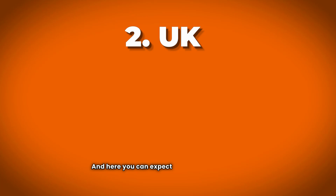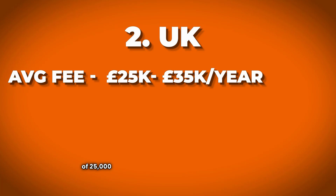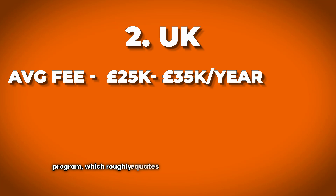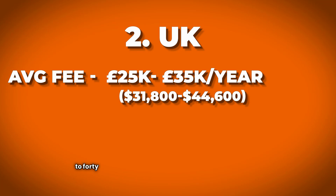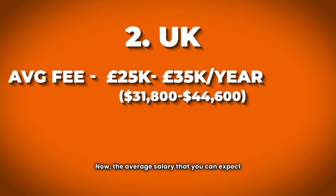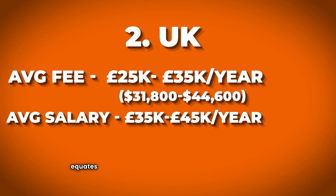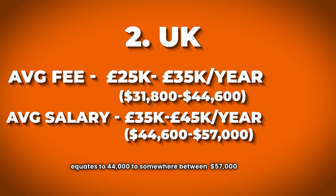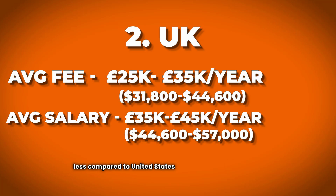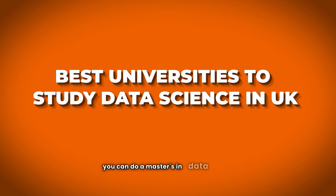Moving to the United Kingdom, you can expect to pay an average fee of £25,000 to £35,000 per year on your master's program, which equates to roughly $32,000 to $44,000. Since UK programs are usually one year, this is your total fee. The average starting salary for data science freshers in the UK is around £35,000 to £45,000 per year, which equates to $44,000 to $57,000 — noticeably lower compared to the United States.